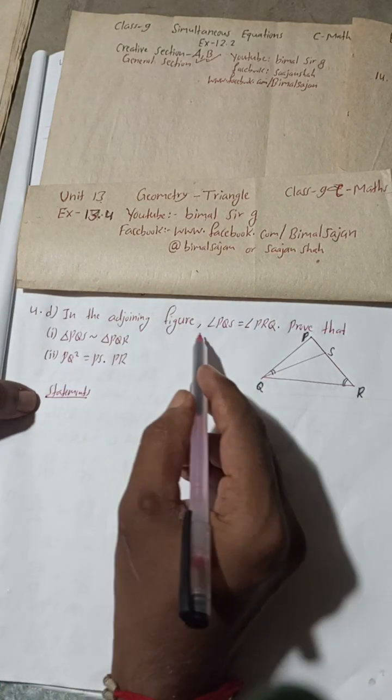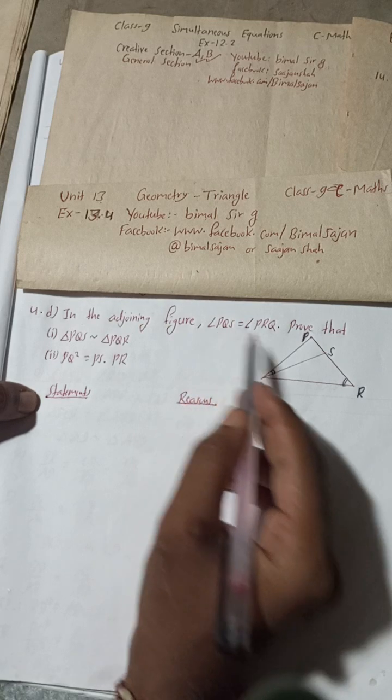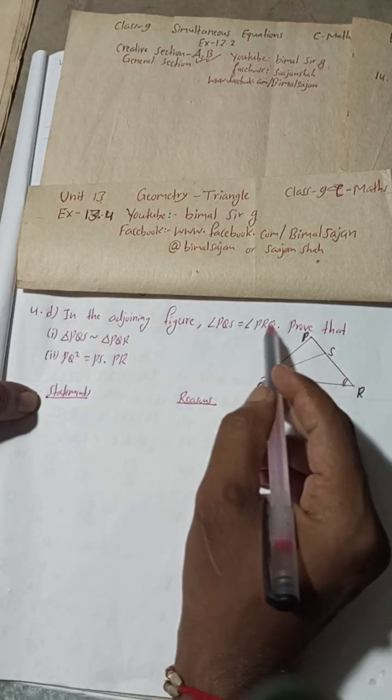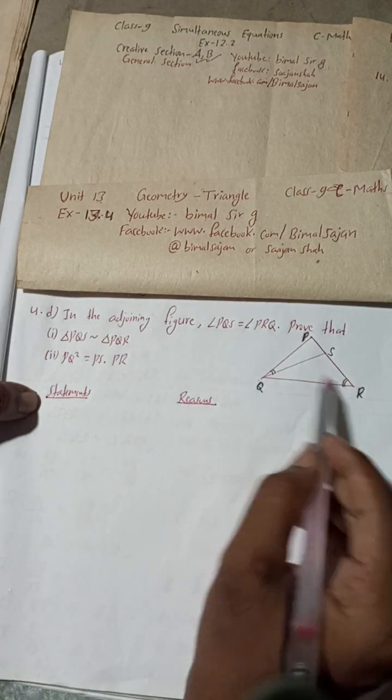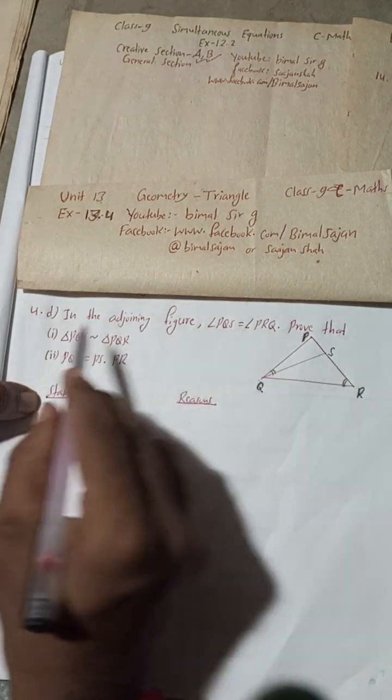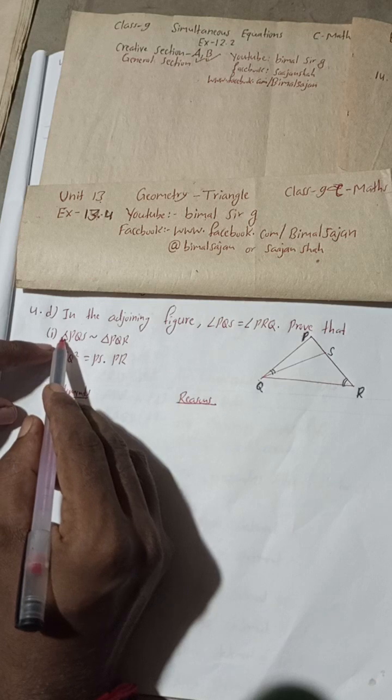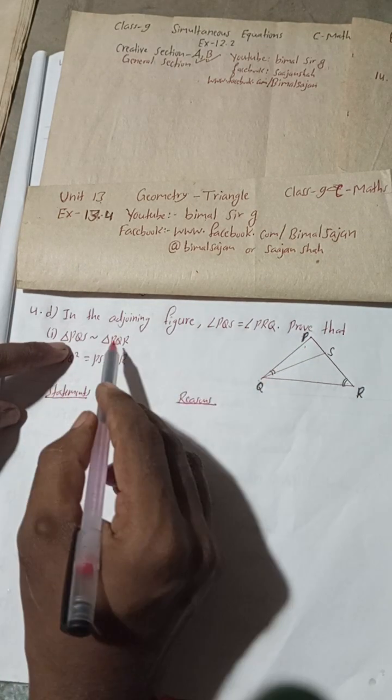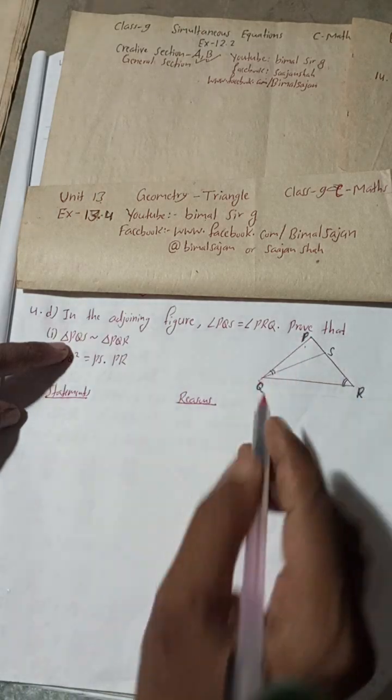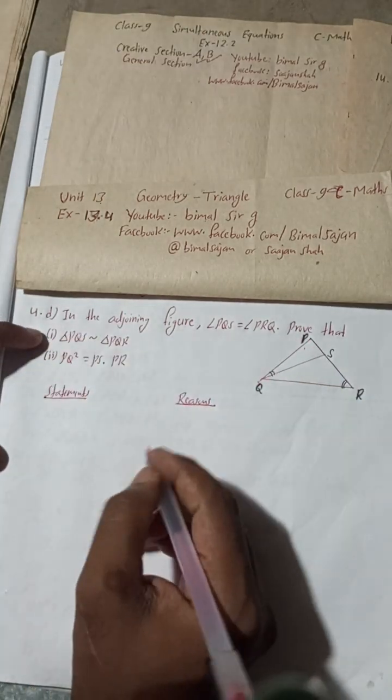Okay, now let's begin this solution. In the adjoining figure, angle PQS is equal to angle PRQ. Prove that triangle PQS is similar to triangle PQR. So first our target is this now.